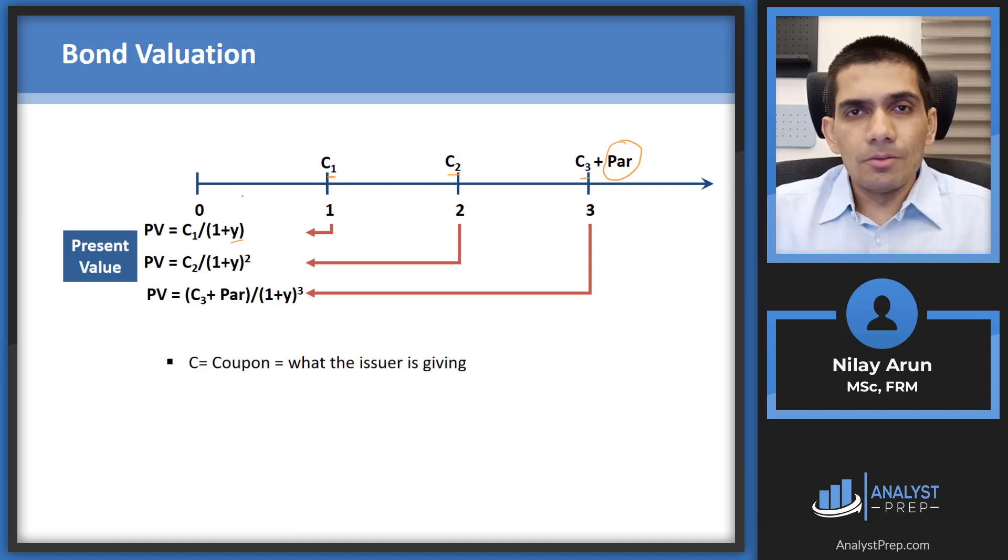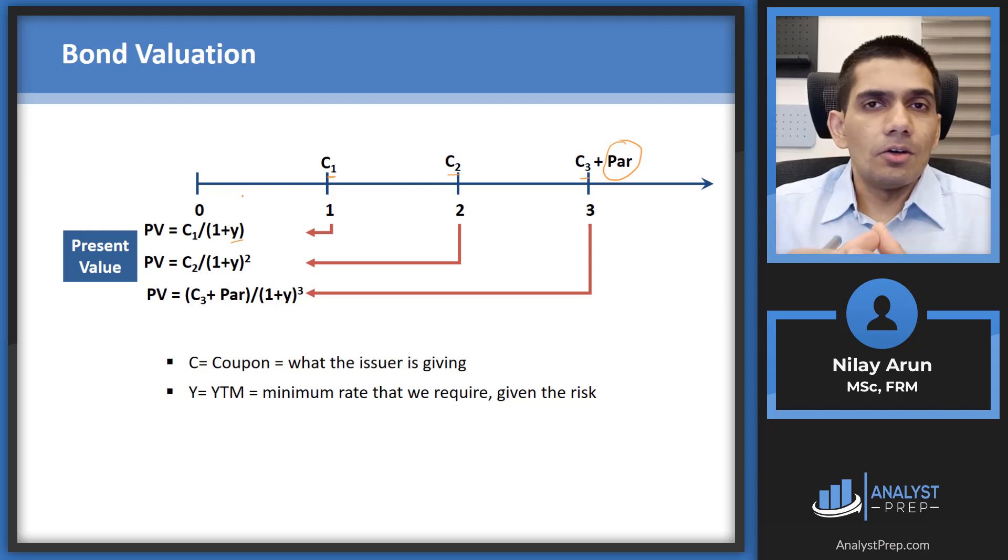Now what is the yield or the interest which goes into the denominator? That is essentially your discounting rate. Like any other discounting rate, this is your required rate of return. So for the level of risk that you're taking by investing your money into that particular bond, what is the return, the minimum return which you expect? So that is Y. So the minimum rate that we require given the risky nature of the bond. Now the price of the bond would really be determined by the relationship between C and Y. What is the relationship?